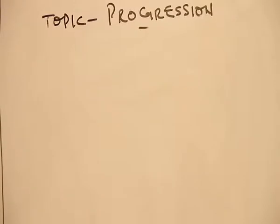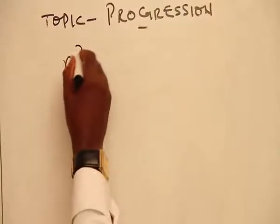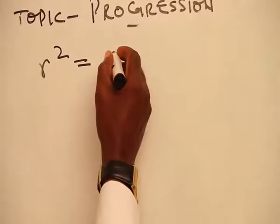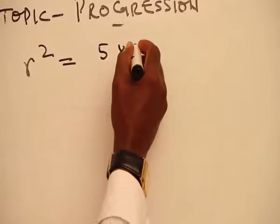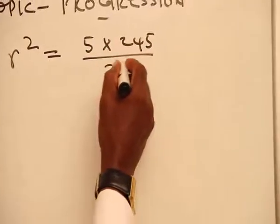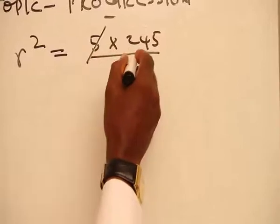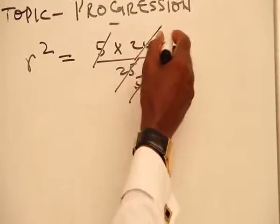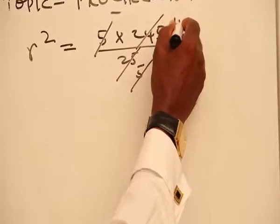Simplifying further, r squared is equal to 5 times 245 over 25. 5 will cancel 25 to give you 5. 5 will cancel 245 to give you 49.